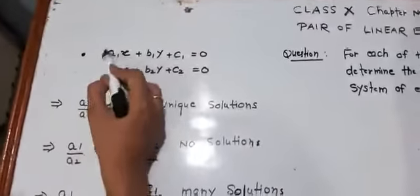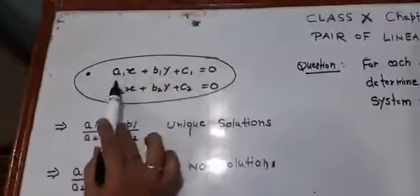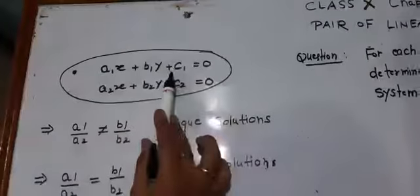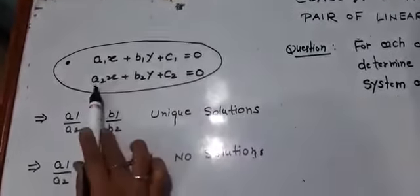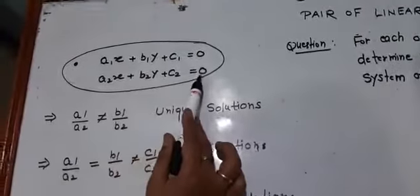First of all, in the past video, this is the main formula: a1x plus b1y plus c1 equals 0, and a2x plus b2y plus c2 equals 0.